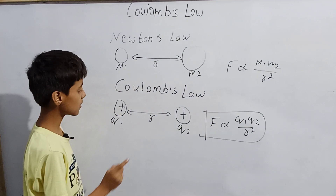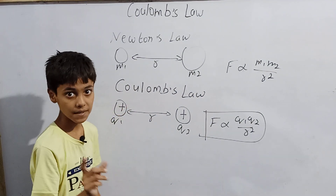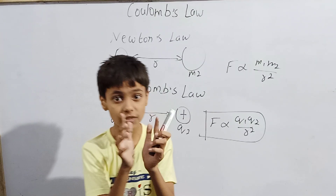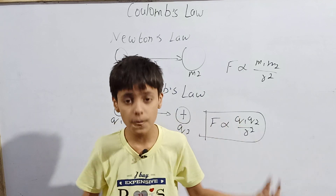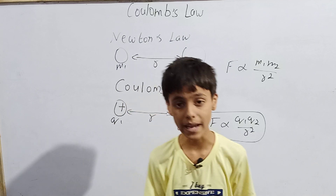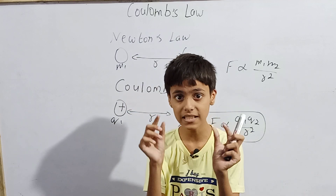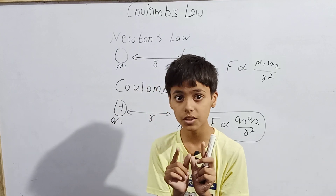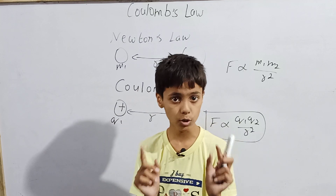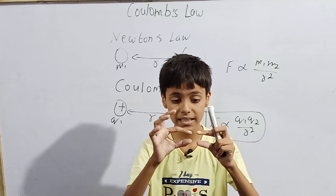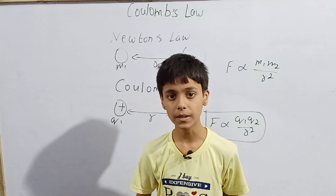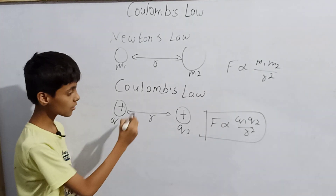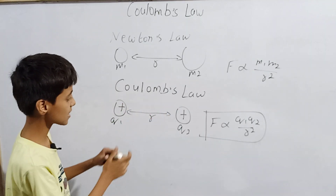Just like with a magnet — when we have the same kind of charges on both magnets and we try to bring them together, they repel each other. If both magnets carry like charges — either both positive or both negative — when we bring them close to each other, they repel. That is Coulomb's Law: if we have like charges, the force will be repulsive, not attractive.